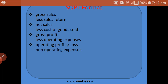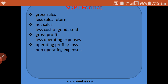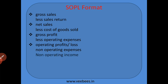Then we will adjust for non-operating items: non-operating expenses and non-operating incomes. Non-operating incomes include interest received, commission received, and bonus received. We will adjust the balance to arrive at net profit before tax. Net profit before tax is also known as EBIT — Earnings Before Interest and Tax.